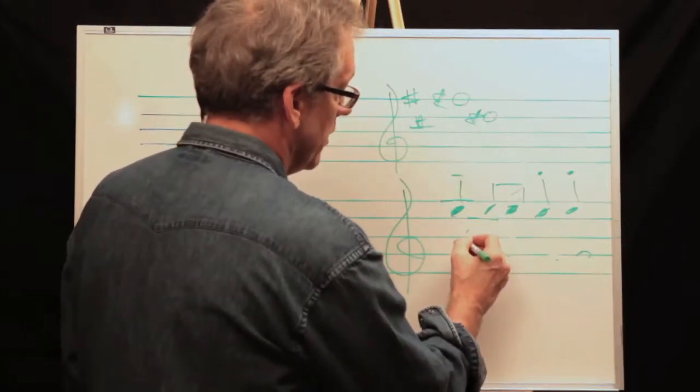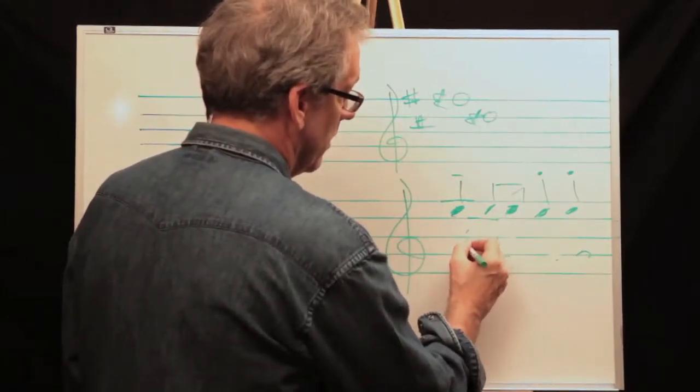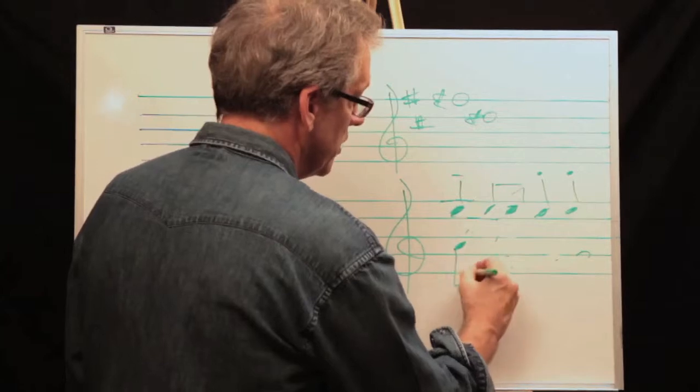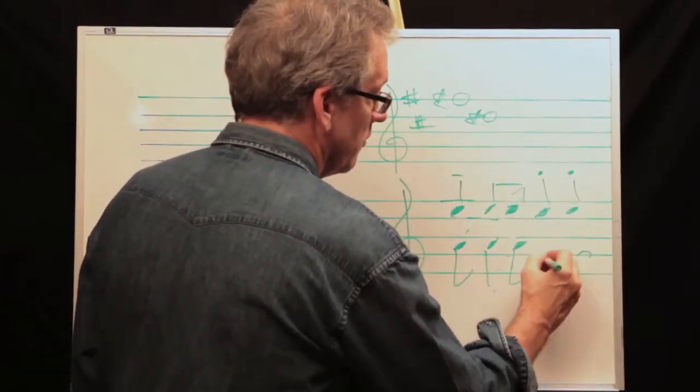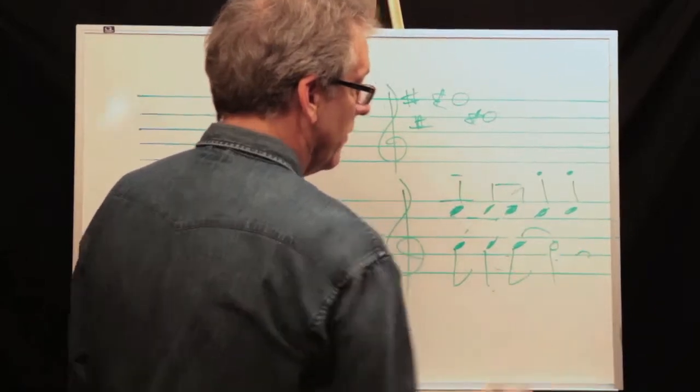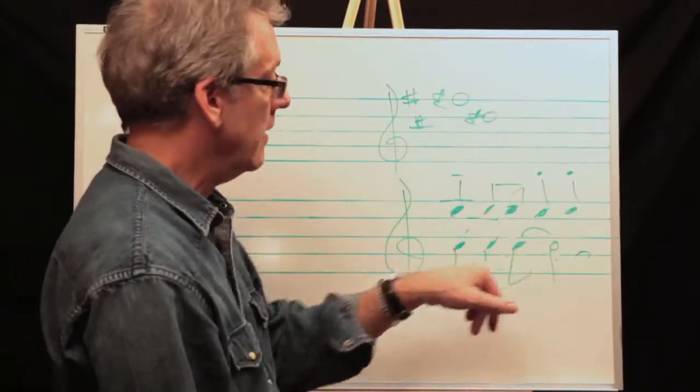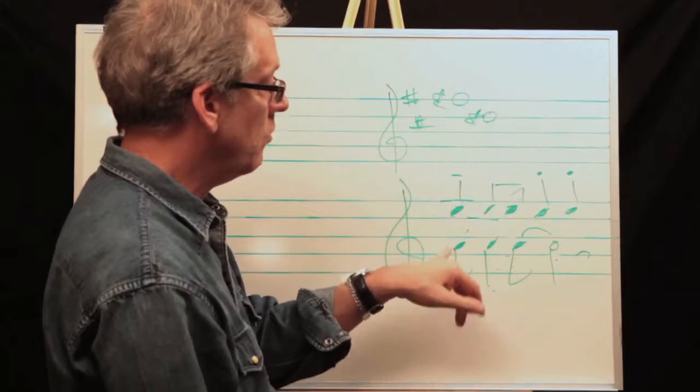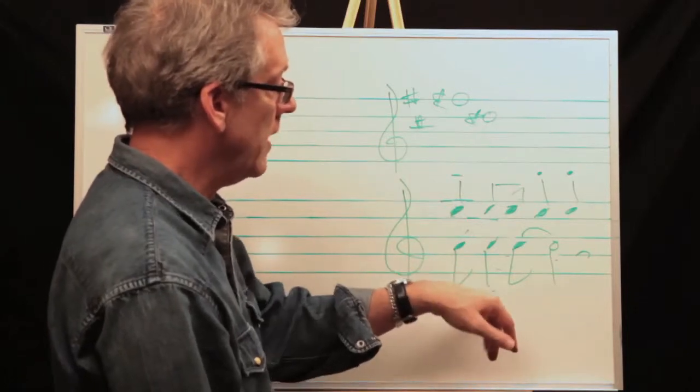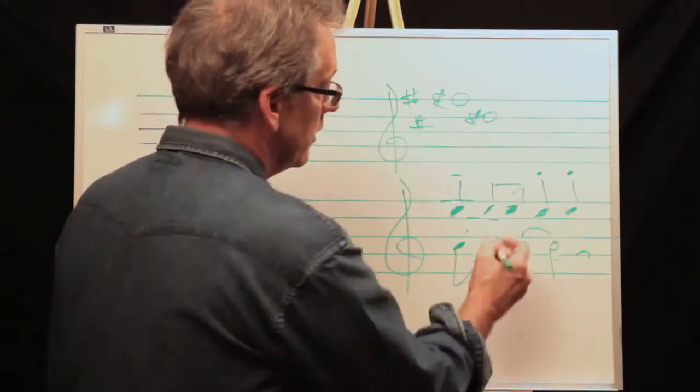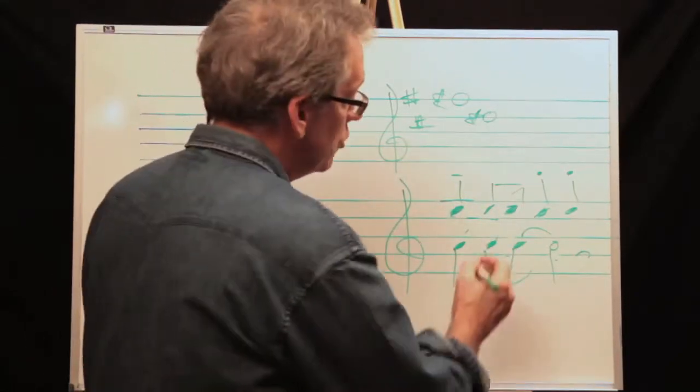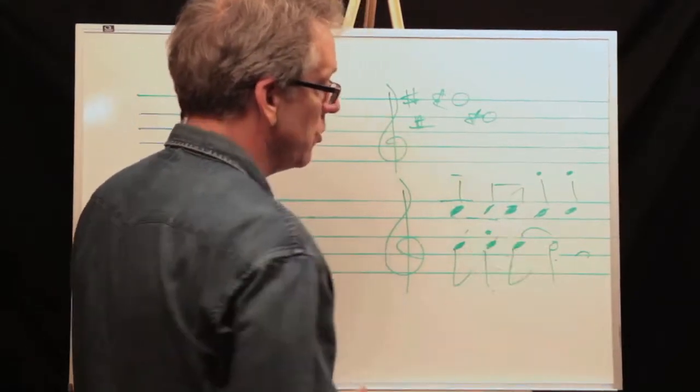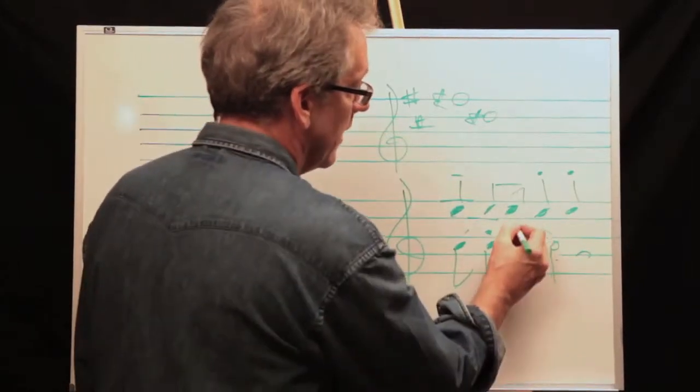So another, let me see. Here's a typical, you see this all the time. Tied it over to a half. Ba-da-da. Two, three, four. One, two, three, four. Ba-da-da. So typically in a jazz phrasing, you would hear that ba-da-da. So you would want to make this quarter note here short. So it's ba-da-da.